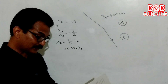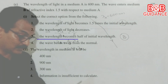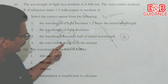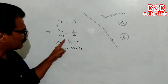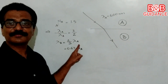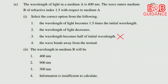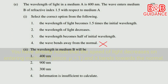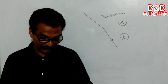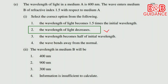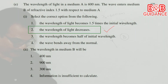The third option says the wavelength becomes half of the initial wavelength — no, we have seen it becomes two-thirds, not half. The fourth option says the wave bends away from the normal — no. So the answer is: the wavelength of light decreases.